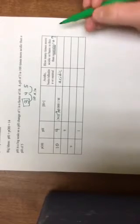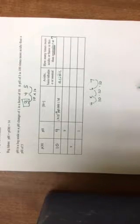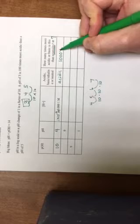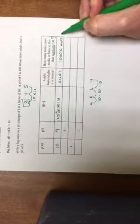And then how many times more acidic or basic is this than neutrality? So I have to know neutrality is 7. So the difference between 4 and 7 is I go 4 to 5, 5 to 6, 6 to 7. So 10, 10, 10, 10 times 10 times 10. This is 1,000 times more acidic than neutrality.